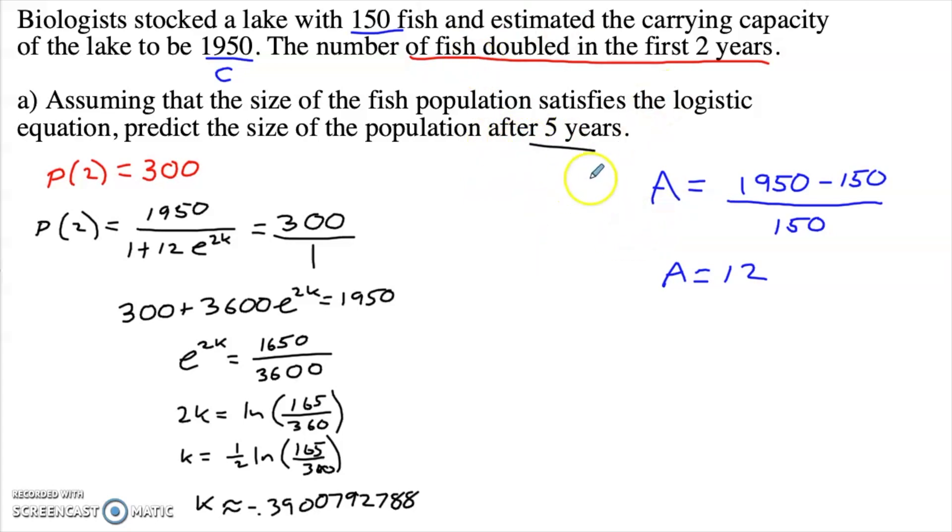Now we want to know the population after five years. So we'll simply go to the equation p of 5 to evaluate that. But we need to round to the nearest whole number because we're talking about a population, which gives us 720.